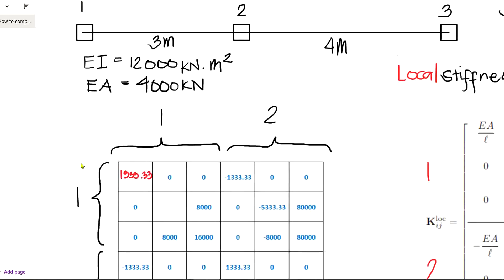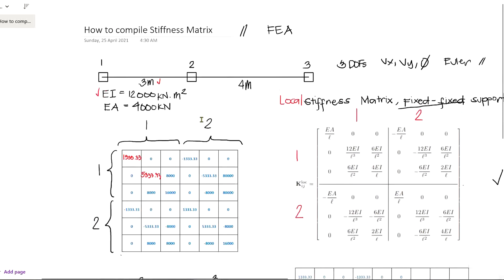These values here is also 12EI all over L cubed, which is 12 multiplied by the value of EI, which is 12,000, divided by 3 raised to the third power, which gives a value of 5333.33.